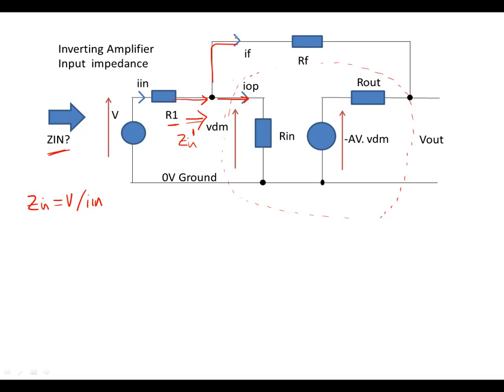So we've got Iin is equal to IF plus Iop. So we could write that one down as well. So the current flowing in the op amp plus the current flowing in the feedback is equal to the current flowing in in total.